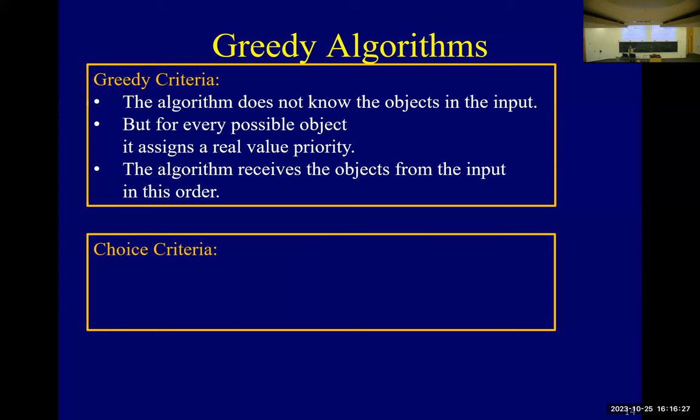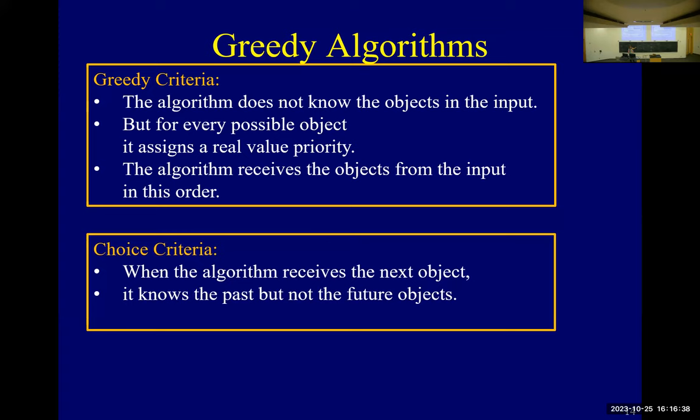So there is also this sense of an online versus an offline algorithm. Offline is you get everything at once and you can think about it. Online is these objects are coming at you and you have to make decisions on the fly. And then you have to make a greedy choice when you receive the next object. You, of course, know the past, but you don't know the future and you have to decide whether to take it or not.